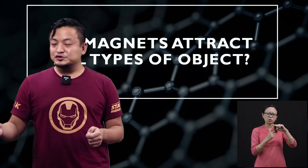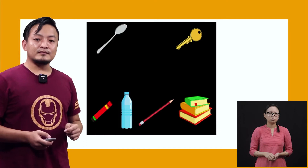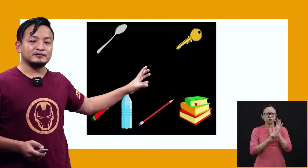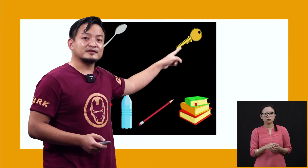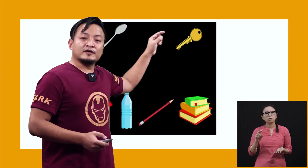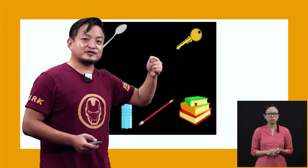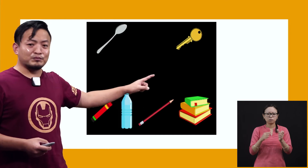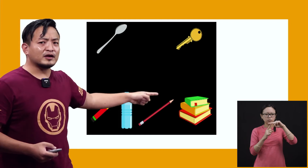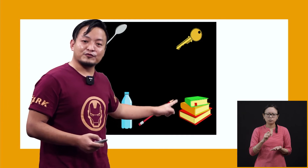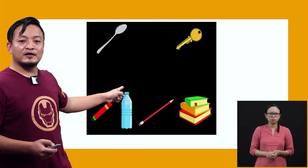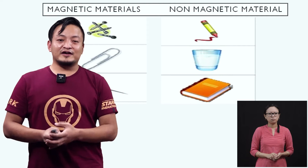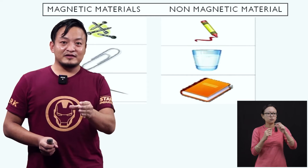If you try with all these objects, this is a metal key — it can be a metal chain as well. With the help of that stick where we have attached the magnet, we will be able to attract this key. But what about these books? Will the magnet attract this book? No. What about this pencil? Will the magnet attract this pencil? No. What about this plastic bottle? No. So students, you have got a rough idea about magnetic material and non-magnetic material.